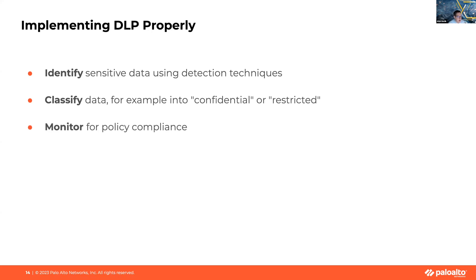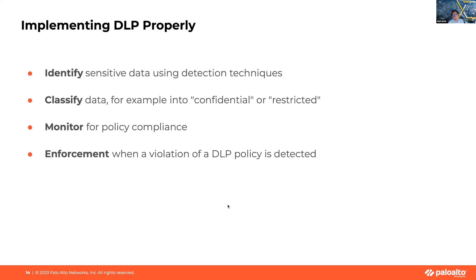Once you've classified your data, you move on to monitoring for data compliance — ensuring sensitive data is used in accordance with your established policies and regulations like PCI DSS and GDPR, including monitoring data in transit as well as data at rest across all control channels. Finally, we move to enforcement — which doesn't necessarily just mean blocking. It could mean alerting on a DLP policy violation. We want to ensure that when a violation is detected, the DLP system takes action to prevent data loss, whether blocking access, quarantining that data, or removing a global share on a document.